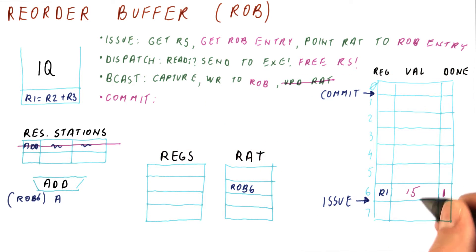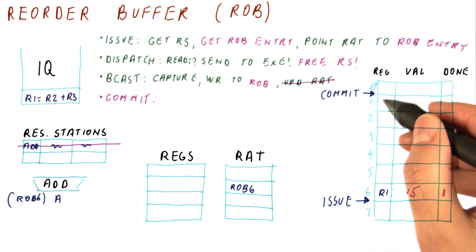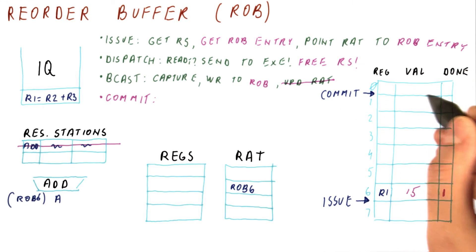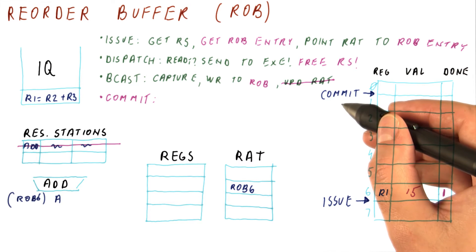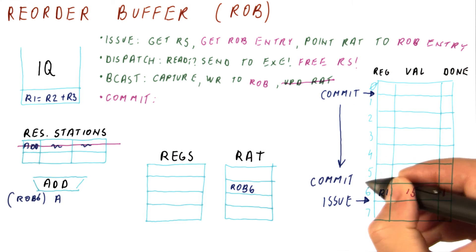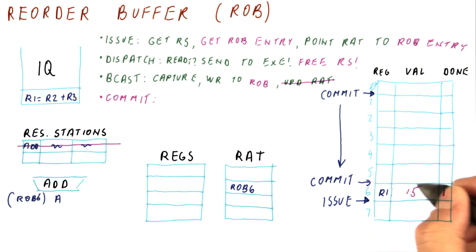To commit this instruction, we must first commit all of the previous instructions. So each cycle, we test whether the next instruction at the commit point is done, in which case the commit point can move on and commit this instruction. So eventually, the commit point will reach here, and now we will test whether this instruction is done, find out that it's done, and commit it.